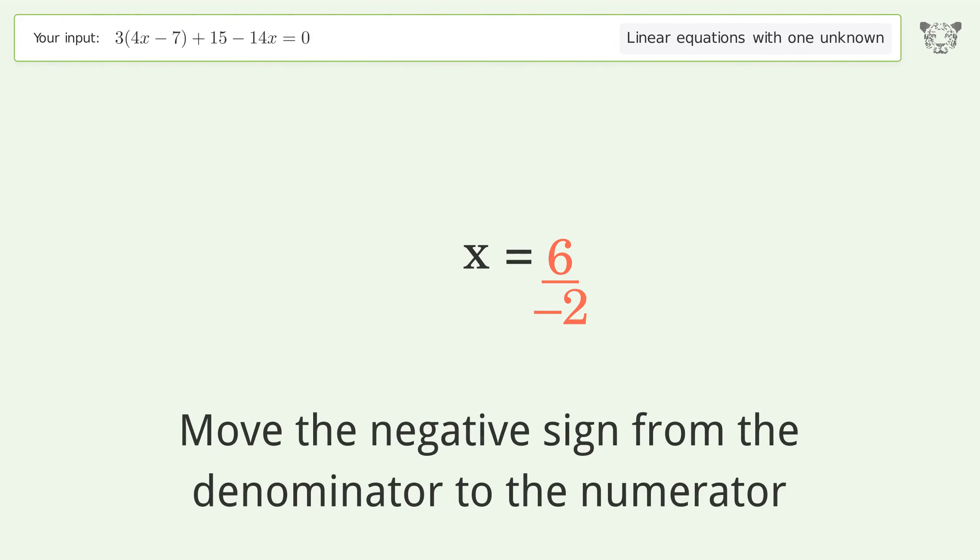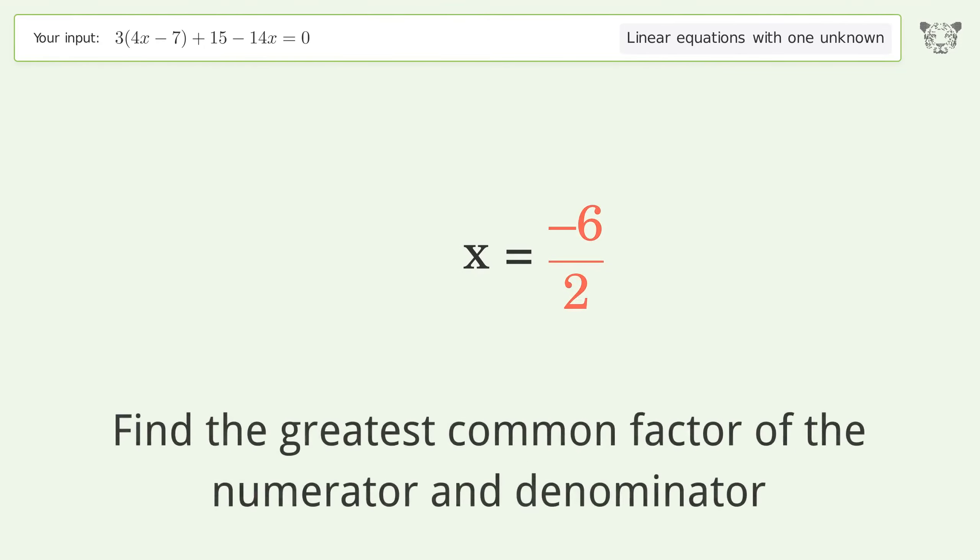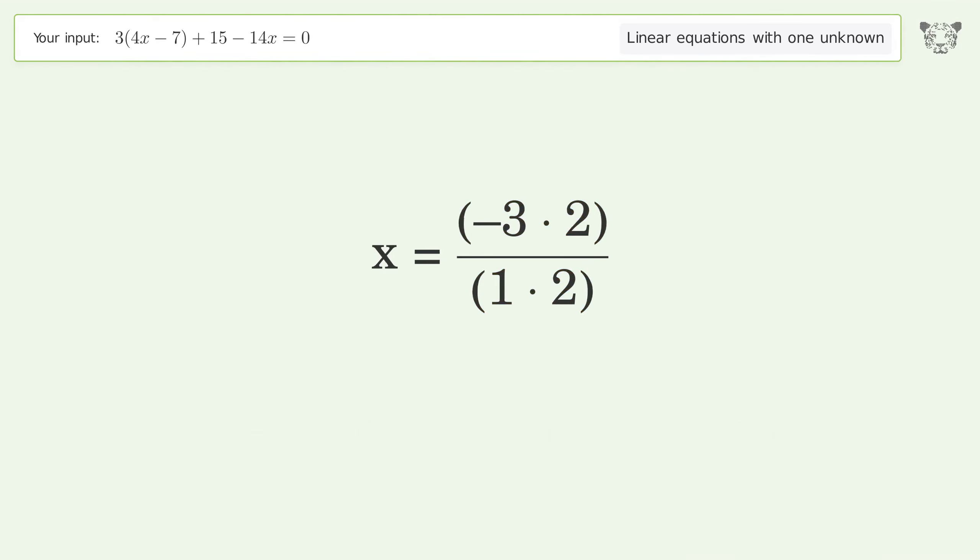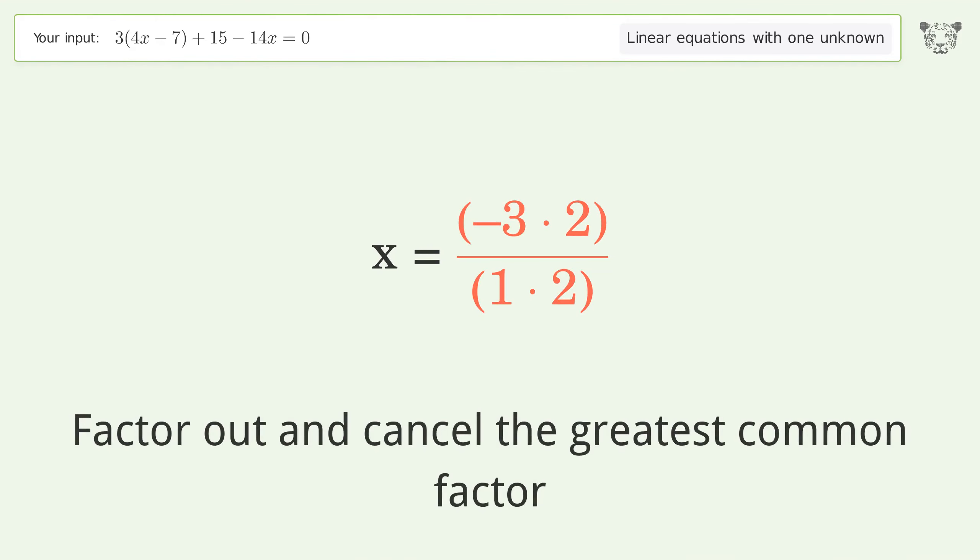Move the negative sign from the denominator to the numerator. Find the greatest common factor of the numerator and denominator, then factor out and cancel the greatest common factor.